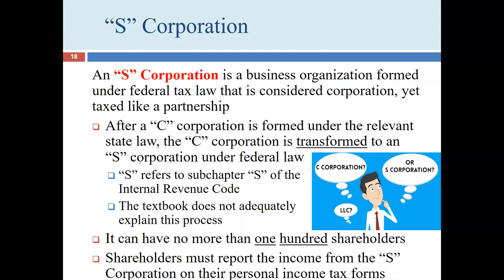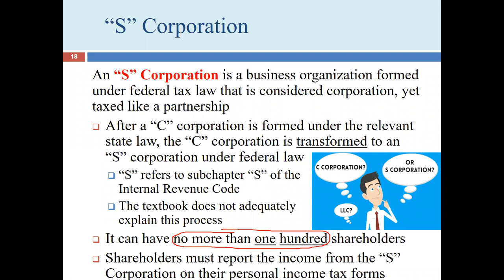To become an S corporation, you take a C corporation formed under state law and elect S corporation status under federal law by following subchapter S of the IRS code. The key factor is size: if the corporation has no more than 100 shareholders, it may qualify. Once you reach 101 shareholders, it's too late. Shareholders of an S corporation must report the income from the S corporation on their personal income tax forms.